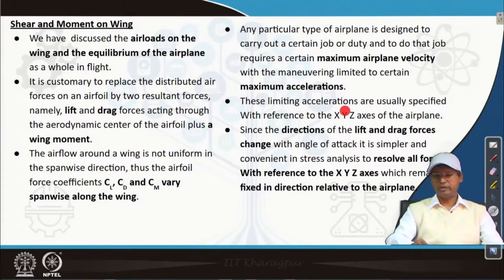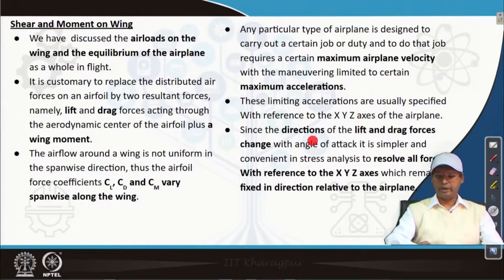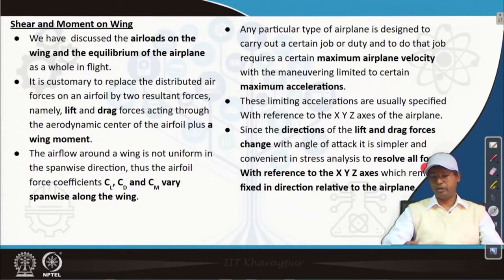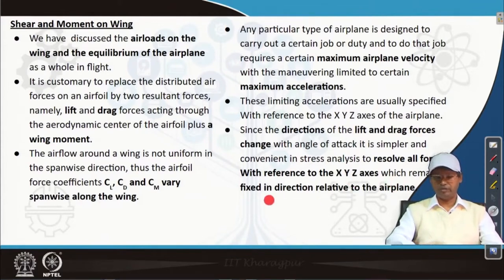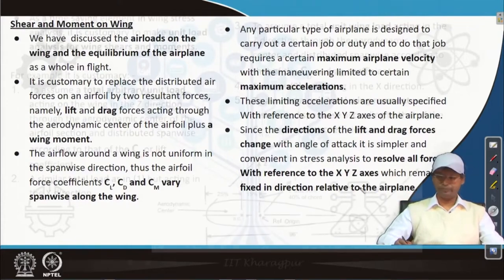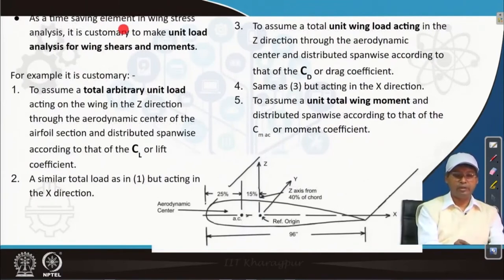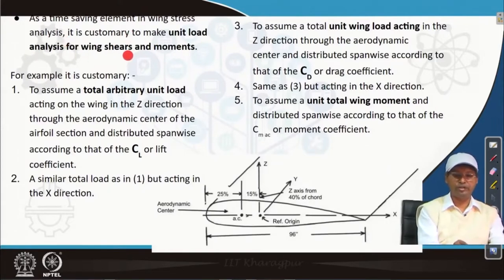These limiting accelerations and directions are usually specified with reference to the x, y, z axis of the airplane. Since the directions of lift and drag forces change with angle of attack, it is simpler and convenient in stress analysis to resolve all forces with reference to the x, y, z axes, which remain fixed in direction relative to the airplane. As a time-saving element in wing stress analysis, it is customary to make a unit load analysis for wing shears and moments.